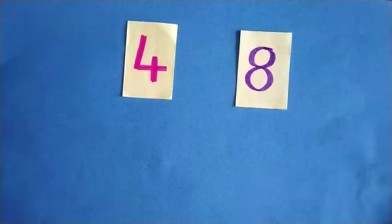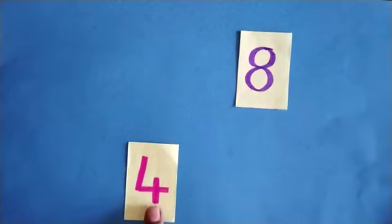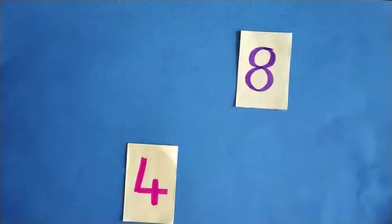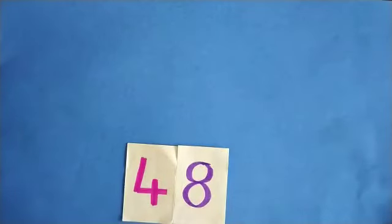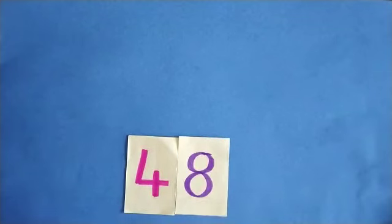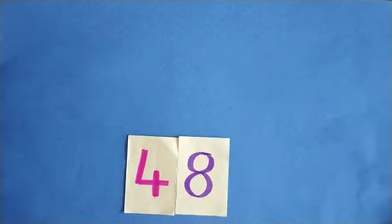How we can make very easy, first you take this number 4 and then bring the 8 number here. Now you got one number, that number is 48. 48 means 4 tens and 8 singles.